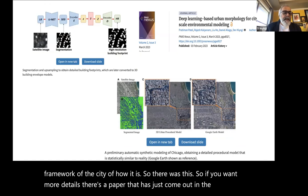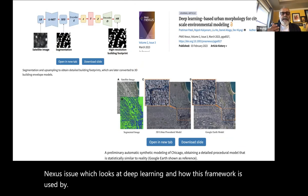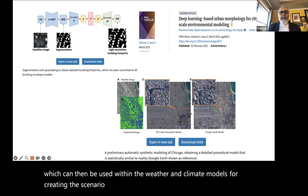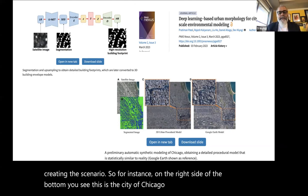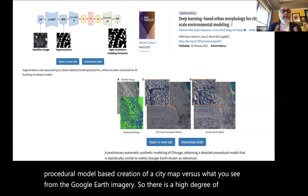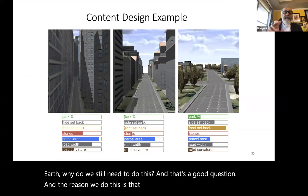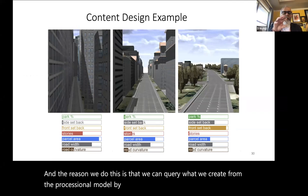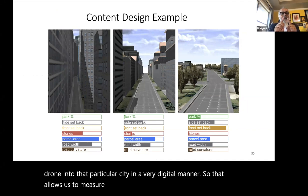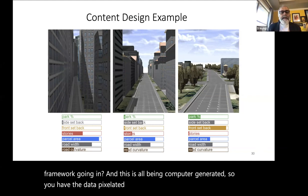Here's the city of Chicago: you can see the procedural model-based creation versus Google Earth imagery — a high degree of similarity. The reason we do this rather than just using Google Earth is that we can query what we create from the procedural model by zooming in and out as if flying a drone, digitally measuring the width of streets, building heights, and layout. All of this is computer-generated, so you have pixelated queryable data.